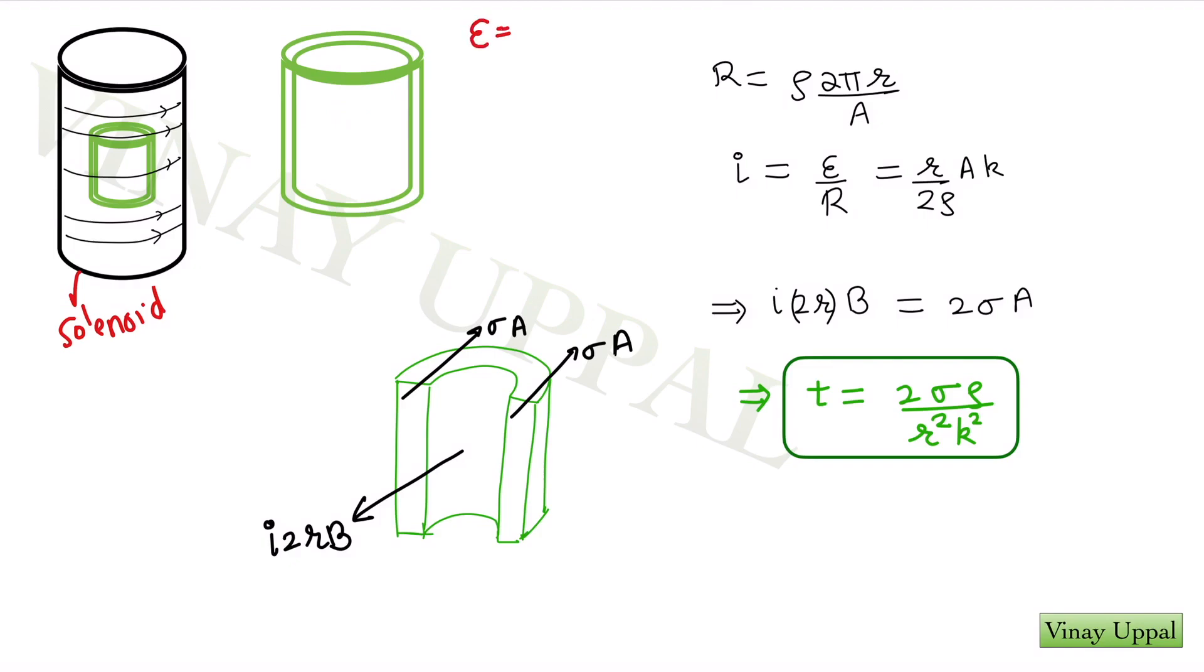Can I simply write induced emf as, because the area is R, so I can write my induced emf as dB by dt times pi r squared. Just a rate of change of flux. Now I need to calculate the resistance in order to get the current. So resistance is rho L by A. So the current is going to flow in this manner.